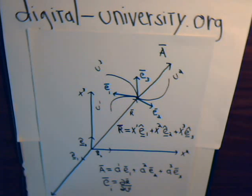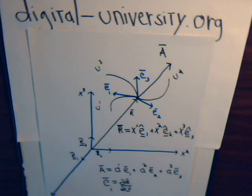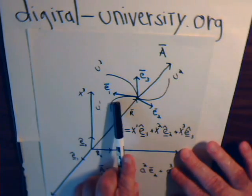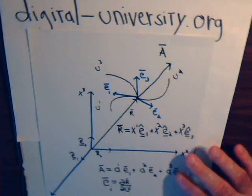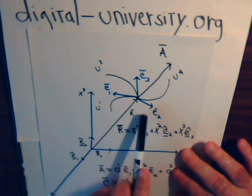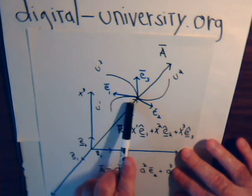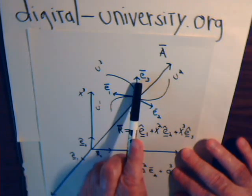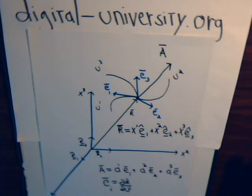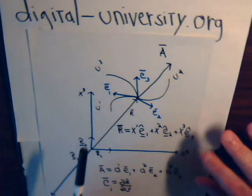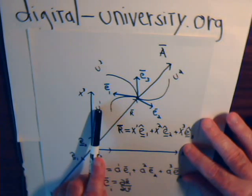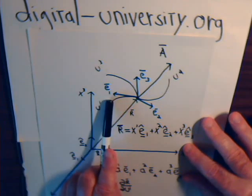We'll probably have to split this video up into two parts. Before we get on with our topic of reciprocal basis vectors, let's highlight what we did in the previous video, where we had a generalized curvilinear coordinate system with coordinate axes u1, u2, and u3. At point p, for each coordinate axis we had a tangential vector — e1 being tangent to u1, e2 and e3 being tangent to their respective coordinate axes. Notice our labeling pattern: the coordinate axes are labeled upstairs, and these tangential vectors have subscripts.